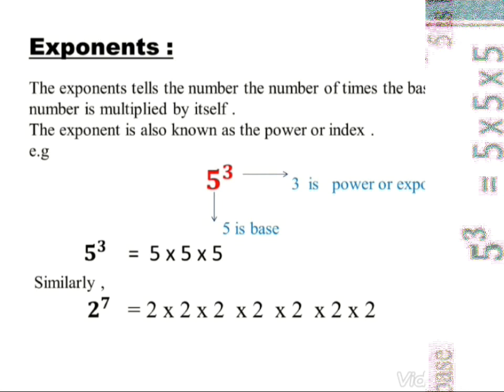For example, five is the base and three is the power or exponent. Five to the power three is its exponential notation, and we write it as five multiplied by five multiplied by five — that means five appears three times. Similarly, consider another example: two to the power seven. Here two is the base and seven is the power or exponent.